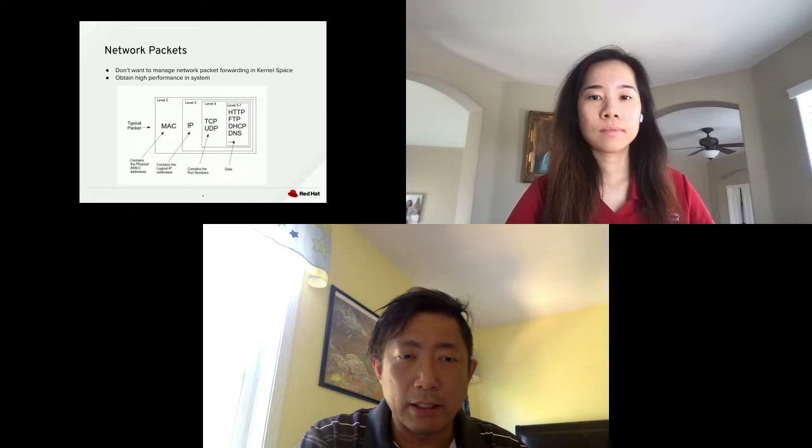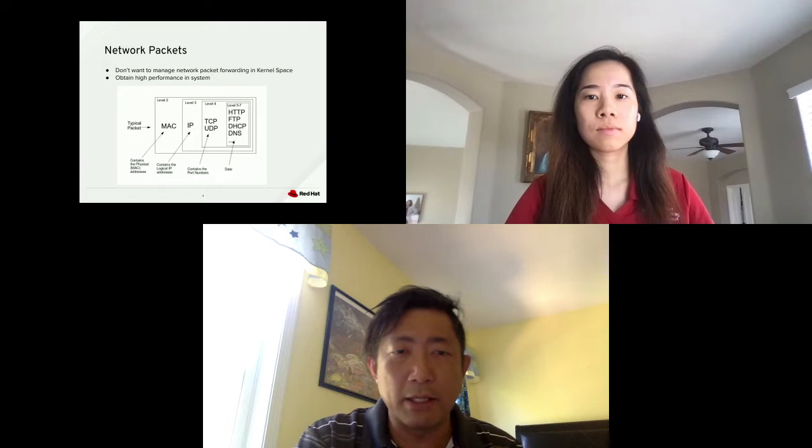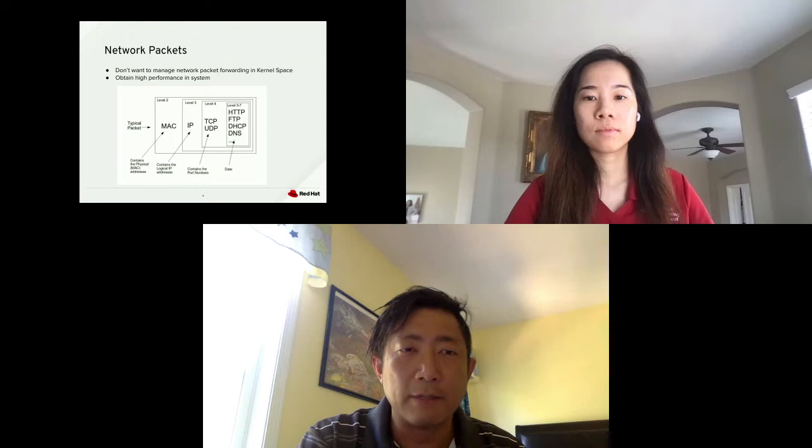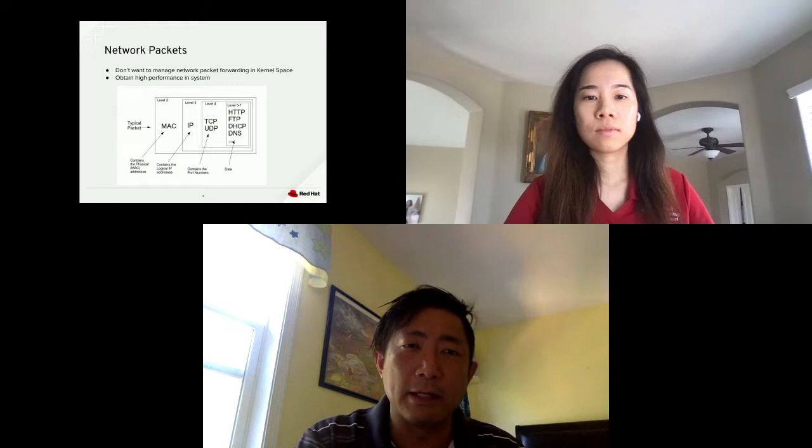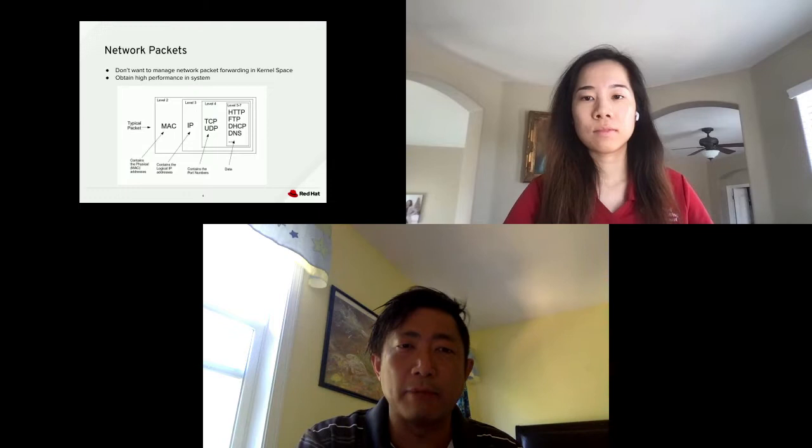A typical packet, as many of you know, contains the physical MAC address, the logical IP address, and the port number for TCP and UDP. It also contains the data within layers five to seven. We don't want to manage this network packet forwarding in the kernel space, so we need to come up with a way to improve this problem by gaining better performance.